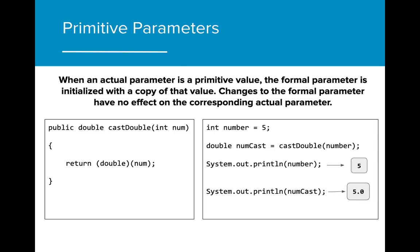When an actual parameter is a primitive value, the formal parameter is initialized with a copy of that value. Any changes that are made to the formal parameter have no effect on the actual parameter. In this case, int number on the right is initialized to the value 5.